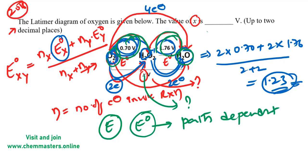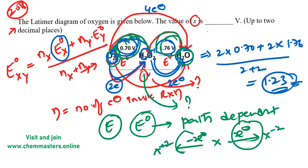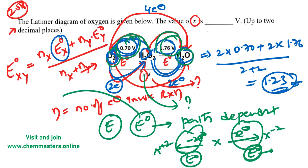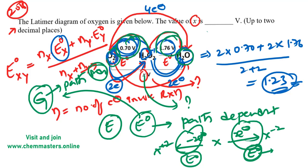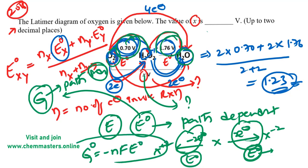For example, if you take a species X, gaining 2 electrons produces X²⁻ and losing 2 electrons produces X²⁺. These two-step reactions can have standard reduction potentials with different signs. So E° is path-dependent, and we need to convert the path-dependent E° into the path-independent quantity G, which is Gibbs free energy. We know that G = −nFE°.